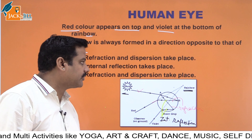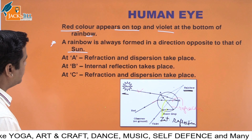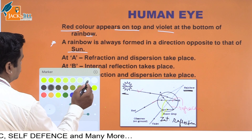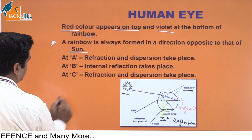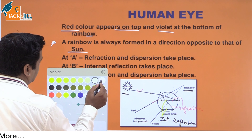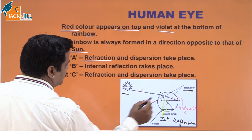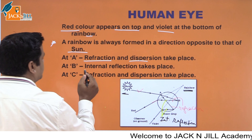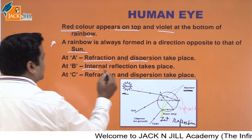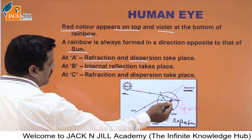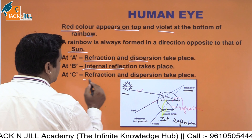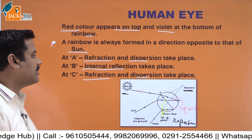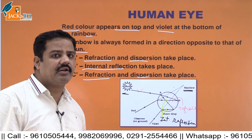To summarise rainbow formation: at point A, refraction and dispersion occur; at point B, internal reflection occurs; at point C, refraction and dispersion take place again. After all this, we get the rainbow.